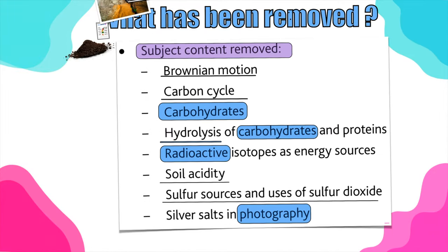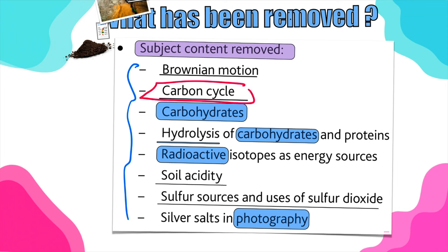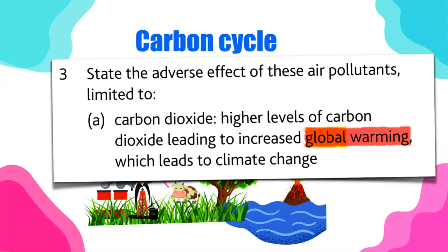To summarise, there is a whole list from the Cambridge publication of everything that's been removed, but this list is not really complete because two more large topics have been removed. Before we get there, note that the carbon cycle has been taken away from the syllabus — but I would still recommend studying it, because you still need it for other parts of the syllabus, including the global warming topic.